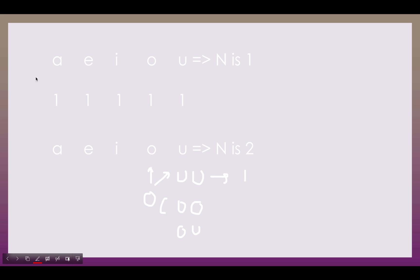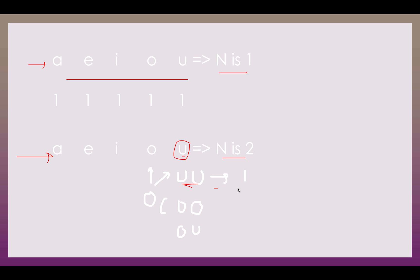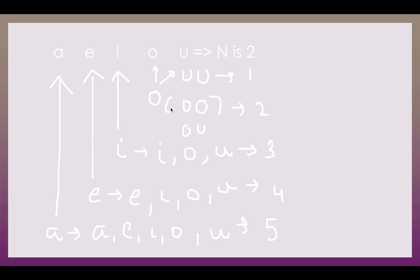Let's take the case when n equals 1: we have a, e, i, o, u — five strings that can be generated. Now for n equals 2, let's start from the 'u' position. If the first character is u, the only valid string is 'uu', so the count is 1. If the first character is o, the strings can be 'oo' or 'ou', giving a count of 2.